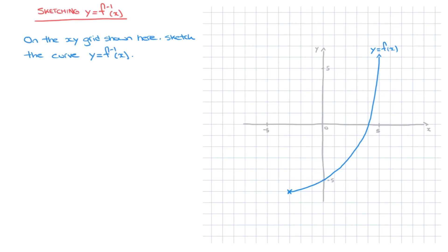In this video, we learn how to sketch the inverse function given the curve of f of x. To do that, we're going to work through the example we see here. We're told: on the x-y grid shown here, sketch the curve of the inverse function y equals the inverse of f of x.